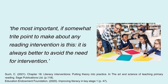In Christopher Such's book, The Art and Science of Teaching Primary Reading, he says: 'The most important, if somewhat trite, point to make about any reading intervention is this: it is always better to avoid the need for intervention.' Universal high-quality teaching, which is differentiated and adjusted to meet the needs of children, should be our starting point. With this in place, the need for additional support should decrease. Nevertheless, some children will require additional support to enable them to make further progress in literacy through a high-quality and well-considered intervention.